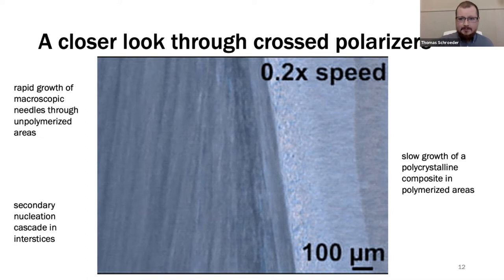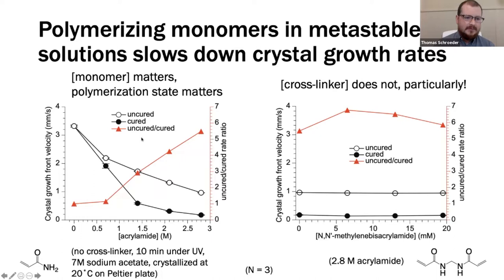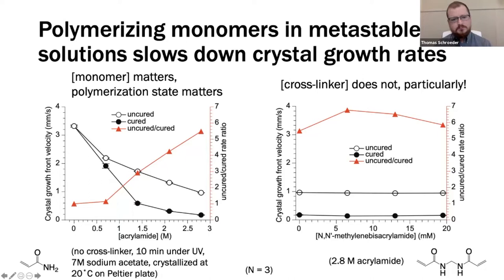The polymerization process slows down crystallization. From composition studies, the more monomer you have in either the polymerized or unpolymerized case, the slower the crystallization is. The white circles here are the uncured solutions — velocity as a function of monomer concentration. When you cure the solution, the rate goes down further, and the factor by which the rate decreases further increases with more monomer. Interestingly, there's a fairly strong dependence on monomer concentration within the solution, but not a very strong dependence on the crosslink density — which I found counterintuitive. The rule is: the higher the ratio of rates you want to use, the more monomer you need.